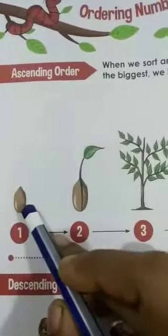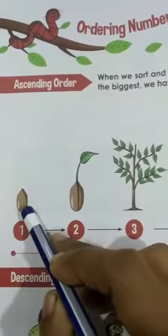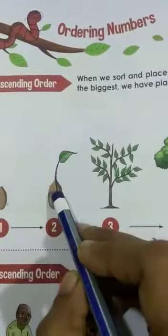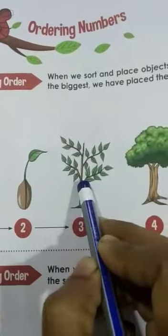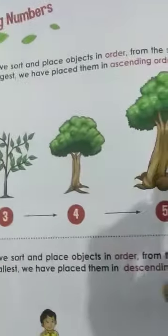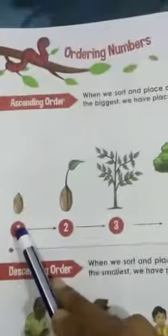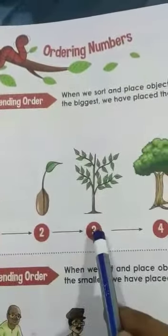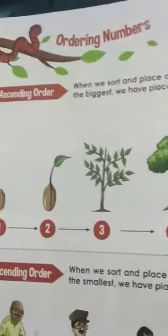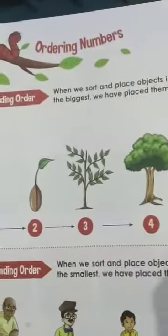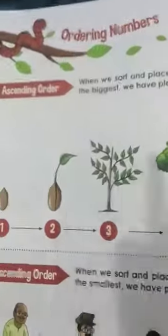This is the way you arrange in ascending order — the smallest one you write first, then the next one, bigger, bigger, and then the biggest at the last. So they have numbered it: 1, then 2, then 3, then 4, and 5. That is called ascending order — from the smallest to the biggest.